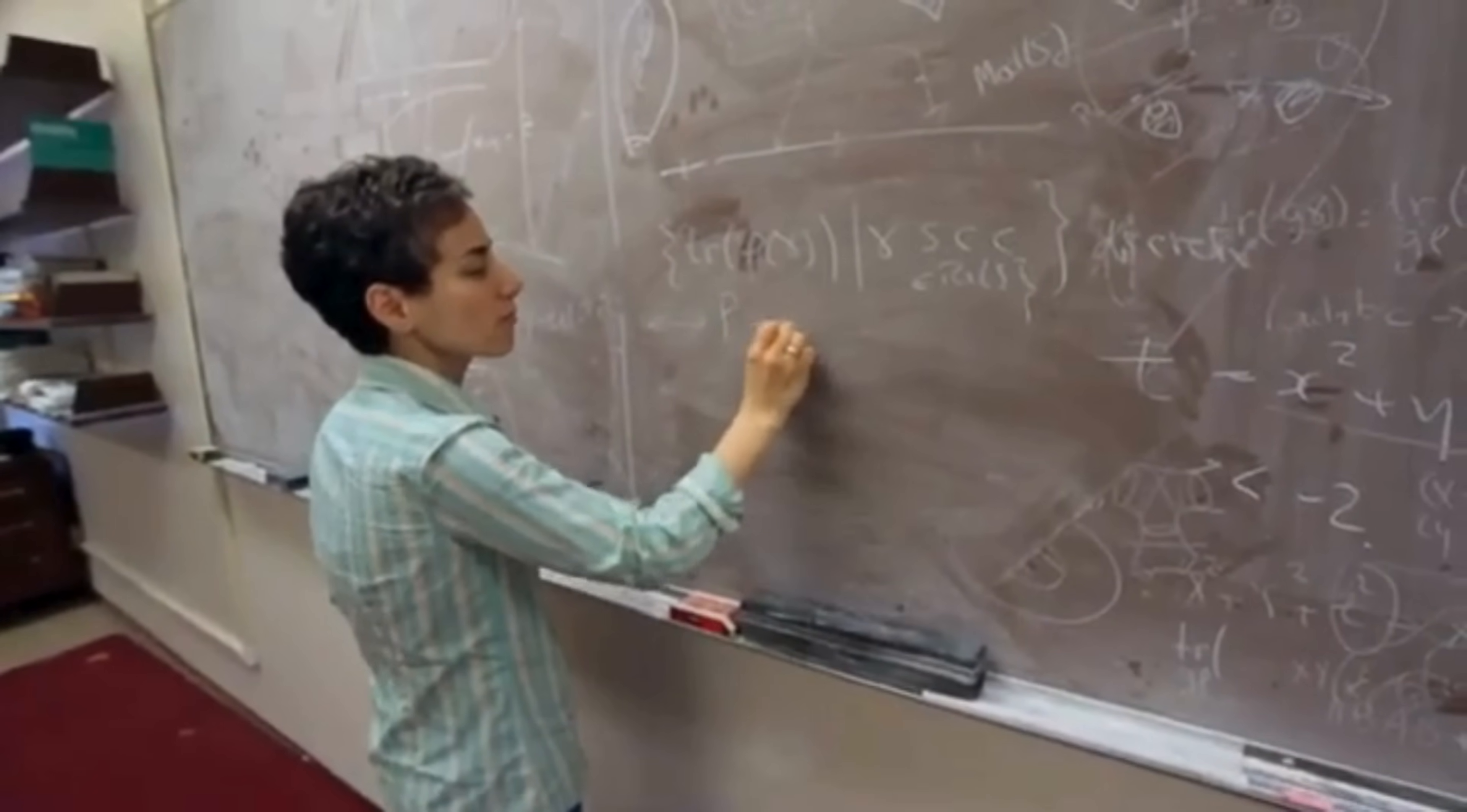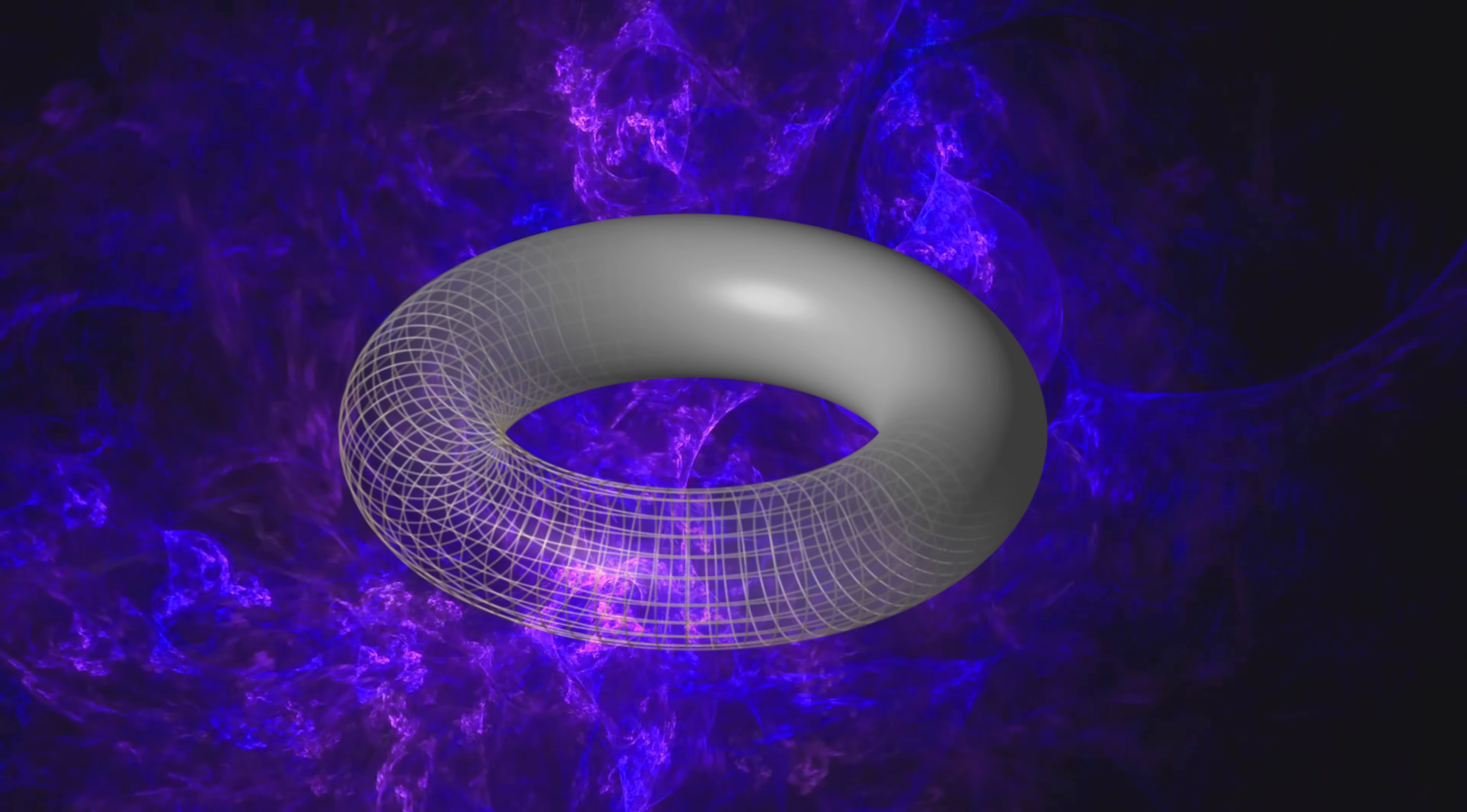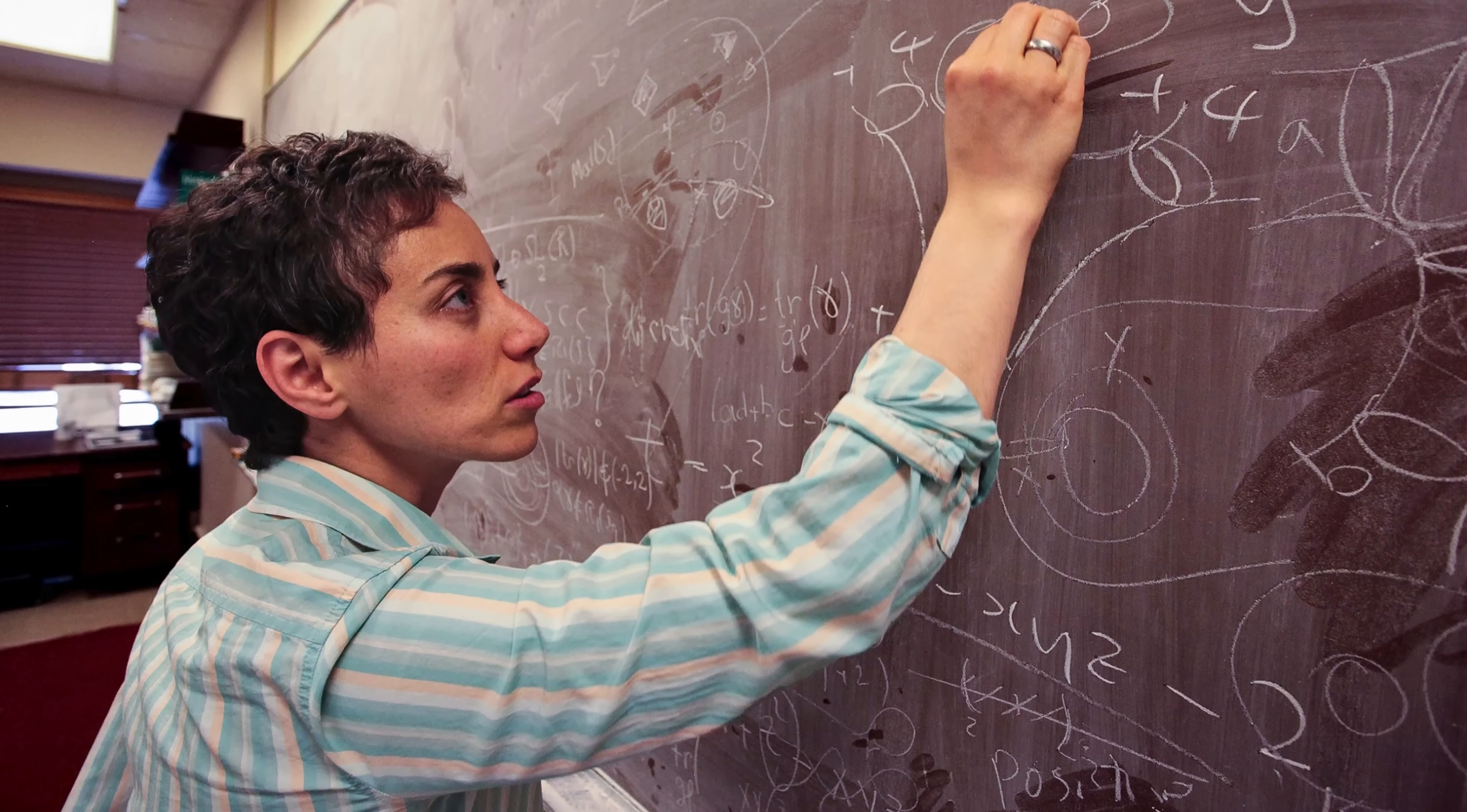Maryam Mirzakhani's research revolved around hyperbolic geometry, a field that examines surfaces markedly different from the familiar flat plane or spherical globe we commonly encounter. To visualize these surfaces, imagine a donut or a saddle, each curved in distinctive ways. Unlike a sphere, a donut shape, technically called a torus, features a single hole, fundamentally changing its geometric properties. Similarly, more complicated shapes, whimsically referred to as a pair of pants, incorporate multiple holes. Such surfaces are staples in Mirzakhani's mathematical universe.